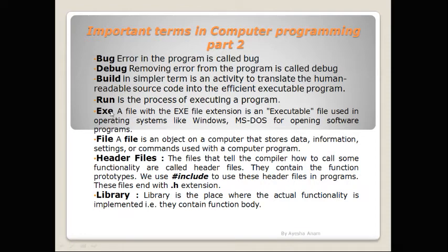The next term is Exe. A file with the exe extension is called an executable file. Exe extension is used in operating systems like Windows and MS-DOS for opening software programs. Exe is essentially the software of your program that hides the source code. It contains the binary machine code that has been compiled from the source code.